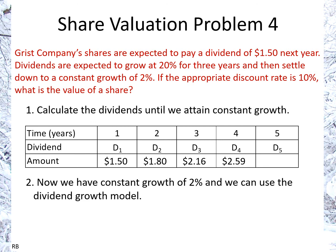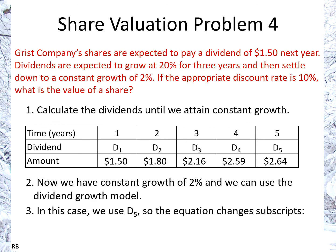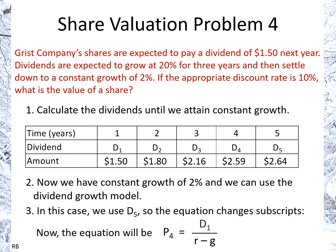Now we can use the dividend growth model. First, we calculate the next dividend, D5, which is $2.64. The standard equation is P0 equals D1 over r minus g, but now the equation is going to be P4 equals D5 over r minus g, since we're shifting the subscripts to match the constant growth starting point.